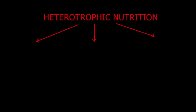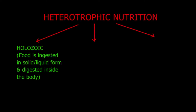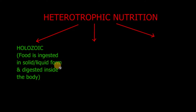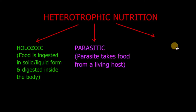The first kind is holozoic mode of nutrition. In this holozoic mode of nutrition, food is ingested in solid or liquid form. Food is ingested from outside and is digested inside the body. This kind of nutrition is found in almost most of the animals including human beings.